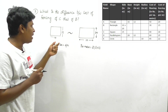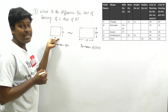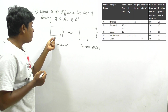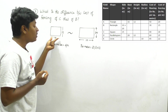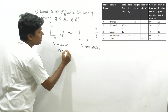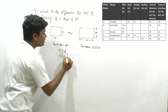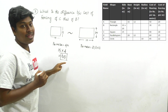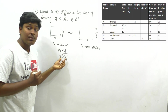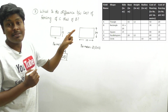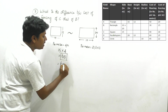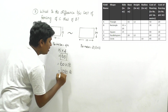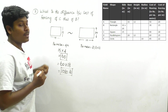For square C: perimeter = 4a = 4 × 15 = 60 meters. The fencing cost for the square is 18 rupees per meter. So 60 × 18 = 1080 rupees for fencing the square.